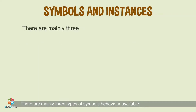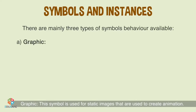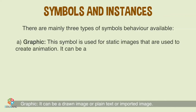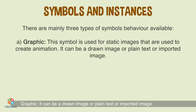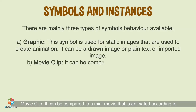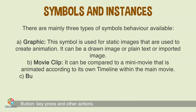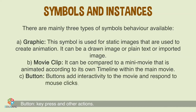There are mainly three types of symbol behaviors available. Graphic: This symbol is used for static images that are used to create animation; it can be a drawn image, plain text, or an imported image. Movie Clip: It can be compared to a mini movie that is animated according to its own timeline within the main movie. Button: Buttons add interactivity to the movie and respond to mouse clicks, key presses, and other actions.